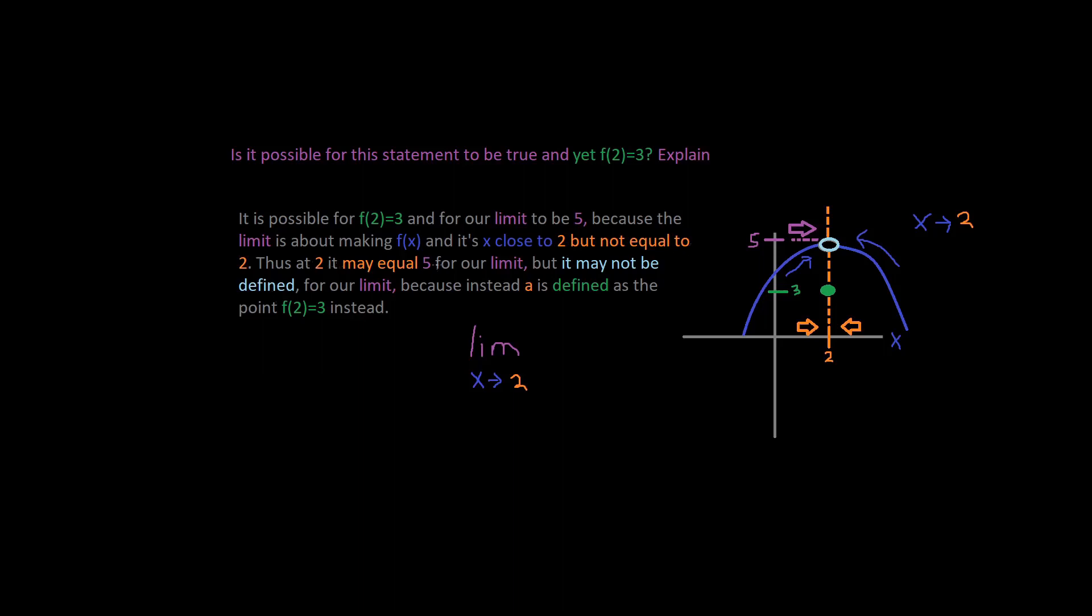Thus at 2 it may equal 5 for our limit. So right here, when our limit approaches 2, it equals 5. So for this function f of x, it's going to equal, you guessed it, 5, right?